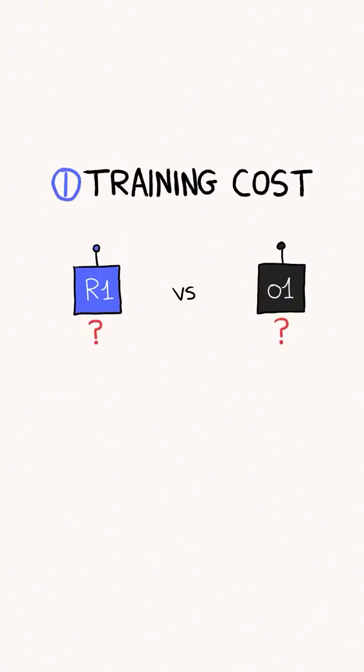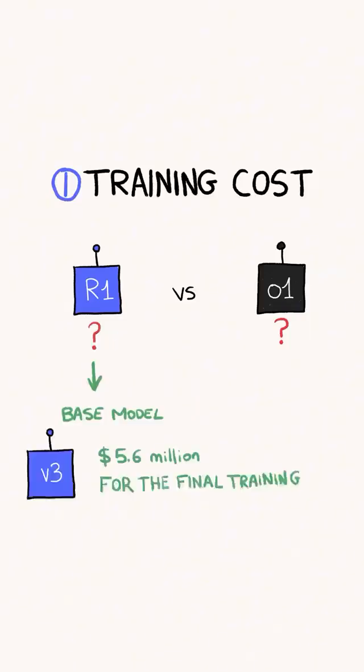We don't have specific numbers on how much R1 or O1 cost to train. The $5.6 million figure being reported is misleading because that's the cost of the final training run of the base model called V3. The names are terrible, I know.